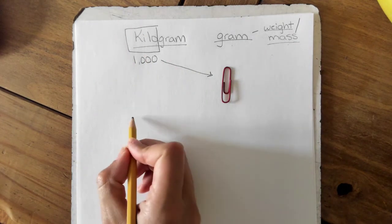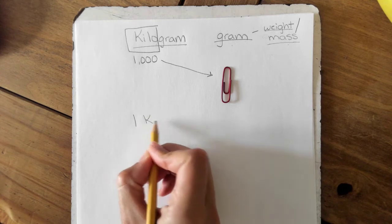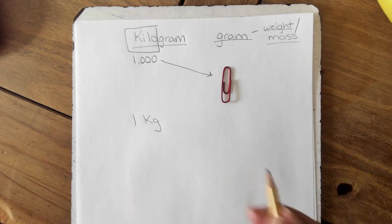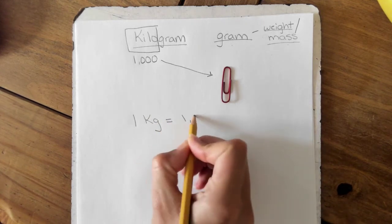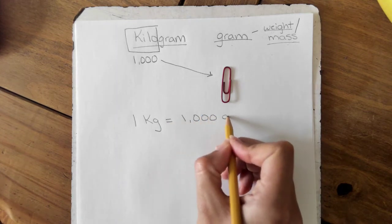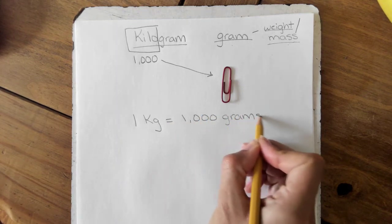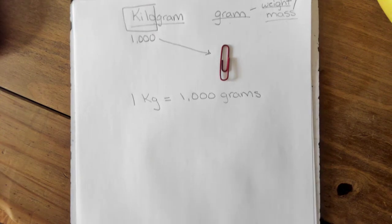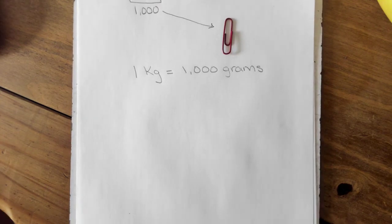So what that tells us is one kilogram—we use kg—equals one thousand grams. What we're going to be working on today is we are going to be going from kilograms to grams.